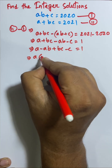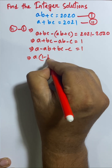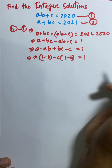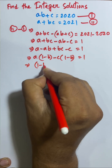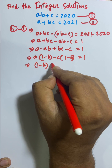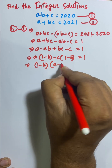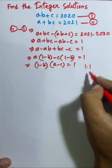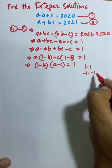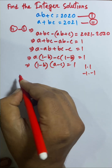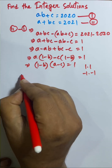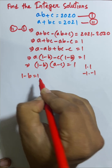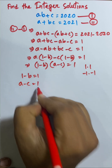Now a is common: a(1 minus b), and c is common: c(b minus 1), which gives (1 minus b)(a minus c) is equal to 1. Now I can explain: 1 times 1 equals 1, or negative 1 times negative 1 equals 1.